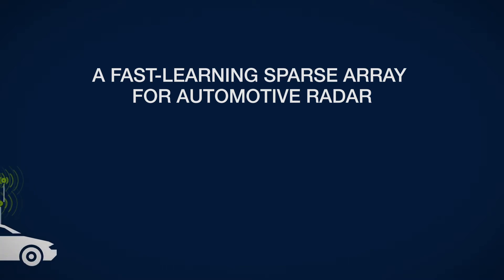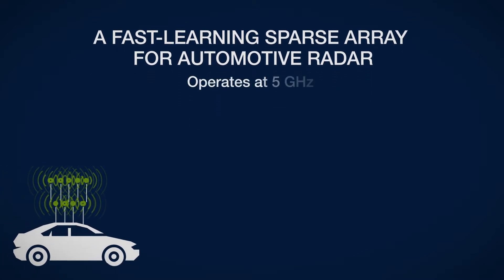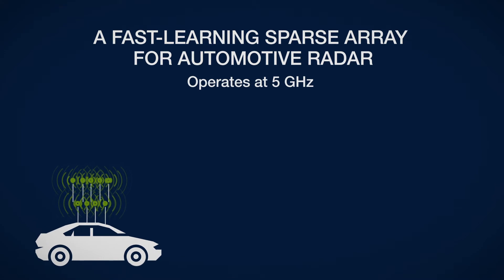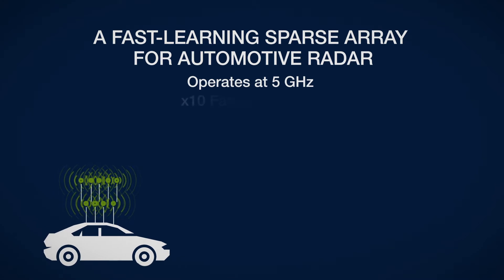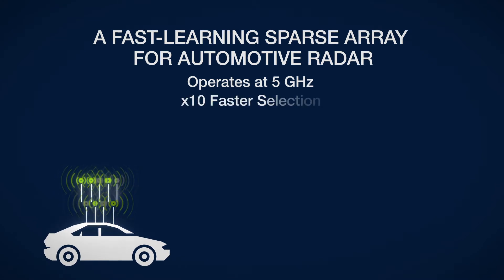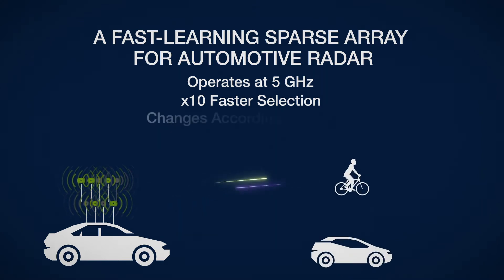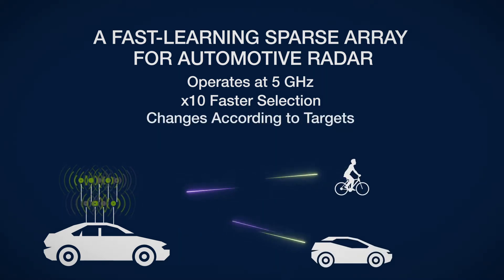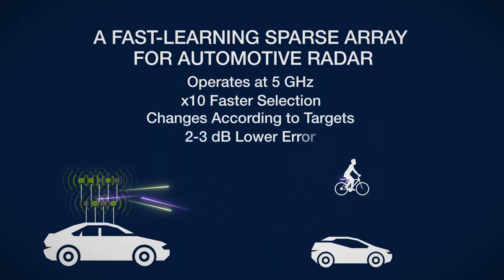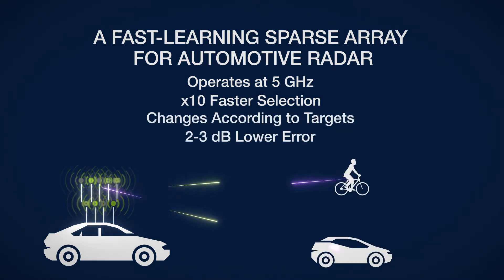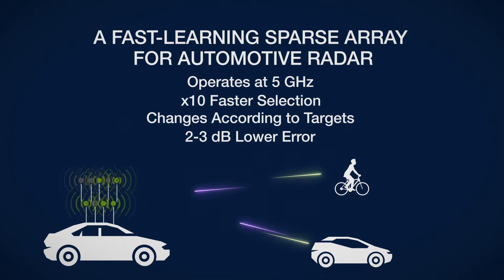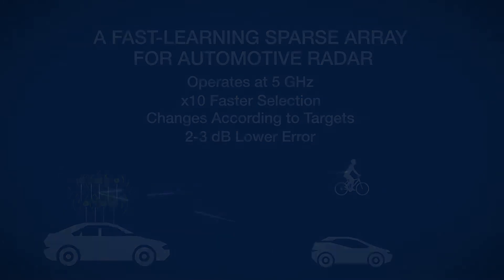In this demo, we present a fast learning sparse array for automotive radar. In our system, which operates at 5 GHz, the sparse array selection is 10 times faster than the standard selection. It changes according to the target's positions, and it yields a 2 to 3 dB lower error compared to random selection.